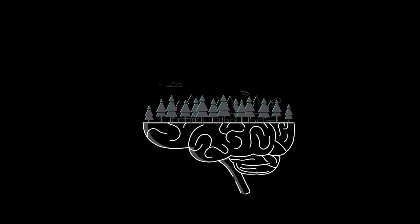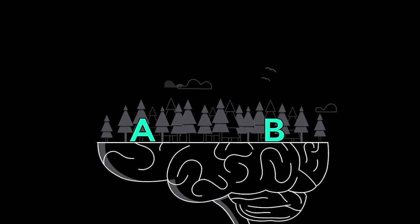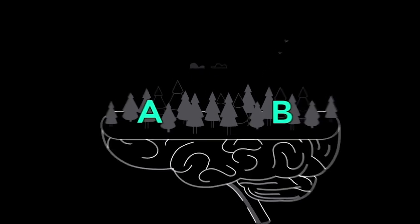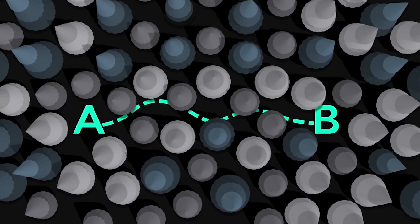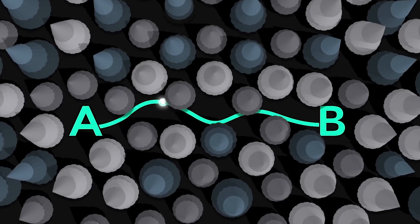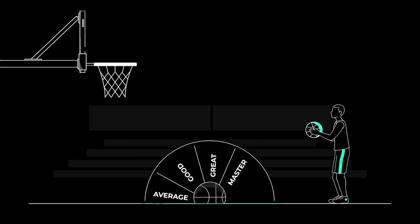As you learn the mechanics of shooting a free throw, you create a trail through the forest. Now you can shoot the free throw because you have created the pathway in your brain. But you probably don't make many shots because the pathway is not very clear yet. In order to improve your free throw, you need to refine and strengthen the free throw pathways in your brain.